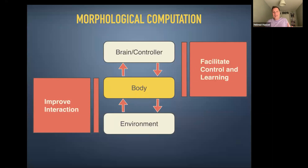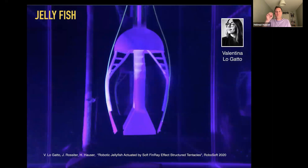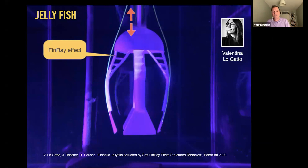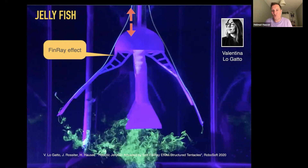Looking at control: we can build morphologies that literally outsource a controller into the body, or provide very simple control signals and have the body translate them into complex behavior. One example is a jellyfish-inspired robot with very simple input — a stick moving up and down. The morphology, inspired by the Finray effect and the cartilage structure found in fish tails, translates this simple movement into a beautiful swimming motion producing vortices very nicely. Complex morphology is needed to translate a simple signal into complex behavior.